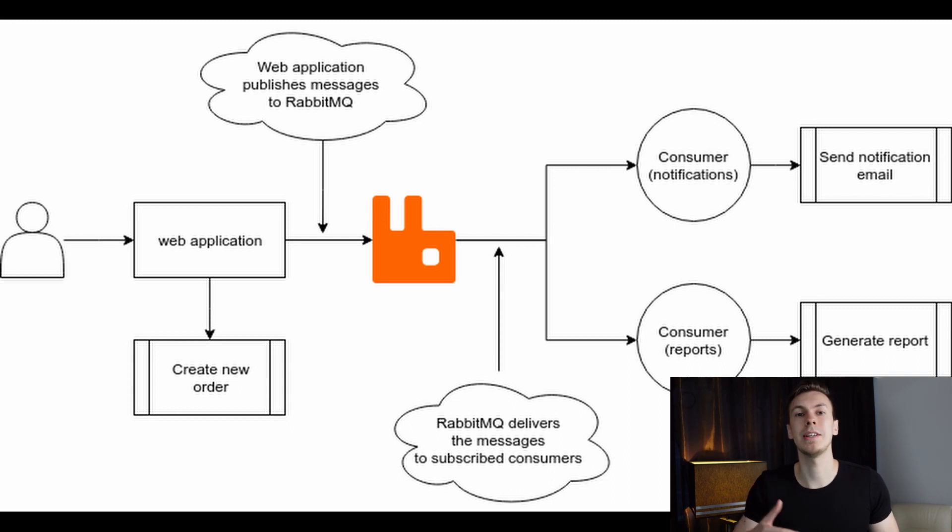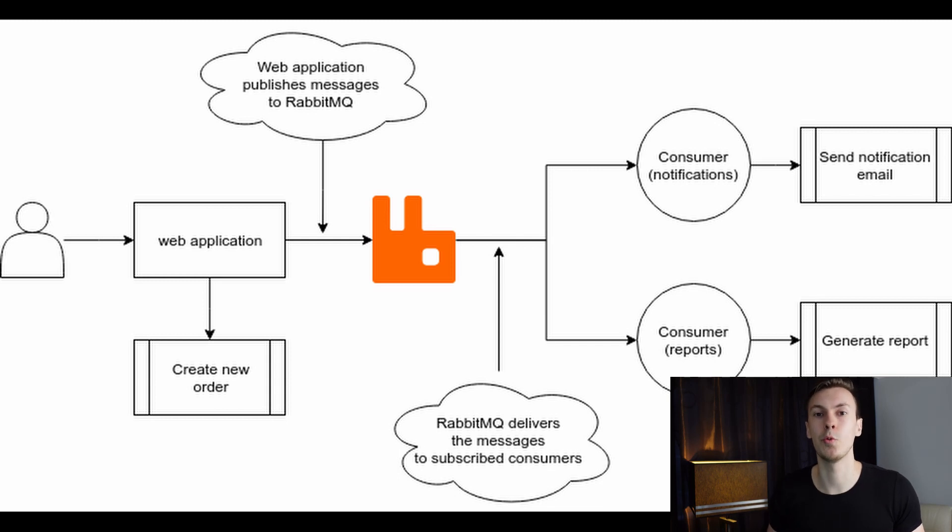We need to change the flow and decouple our web application. Instead of doing all these time-consuming tasks directly, our web application should delegate these tasks to other processes. We can achieve this by using a message broker — our web application publishes messages to the message broker, which then distributes them to consumers. The consumers are responsible for executing these tasks, so the web application is no longer responsible for executing them directly.